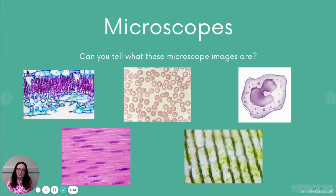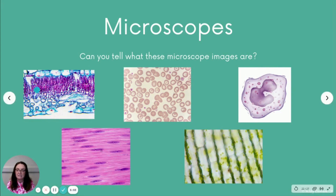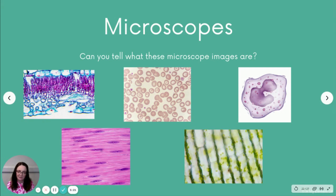To finish off, here are some examples of different microscope images — see whether you can recognize what they are. Previously I've given you pictures of cells that were illustrations, not actual microscope images, and they look slightly different. You need to be able to recognize these, so have a go at jotting down what you think each of the five images might be. Do remember that color may be true but isn't always.